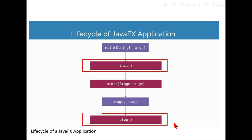Note that the start method is abstract and must be overridden. The init and stop methods have concrete implementations that do nothing. The application subclass must be declared public and must have a public no-argument constructor. Calling Platform.exit() is the preferred way to explicitly terminate a JavaFX application. Directly calling System.exit() is an acceptable alternative but doesn't allow the application stop method to run. A JavaFX application should not attempt to use JavaFX after the toolkit has terminated — that is, after the stop method returns. Note that JavaFX classes must be loaded from a set of named javafx.* modules on the module path; loading JavaFX classes from the class path is not supported.